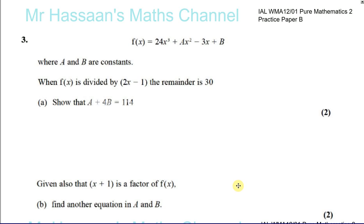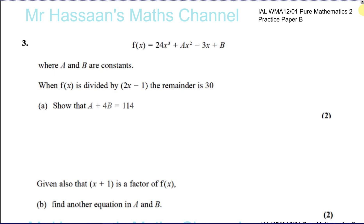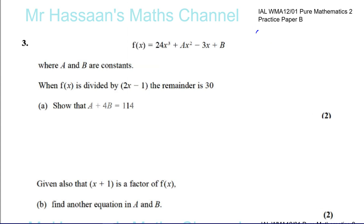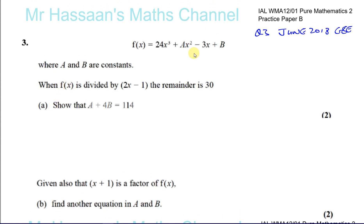This is practice paper B from Pure Mathematics 2 of the International A Level, taken from the C2 paper — specifically the GCE June 2018 paper. This is question 3 from that paper. I've taken out the questions related to the new P2, so most of practice paper B is from that particular paper. I'll just call it practice paper B to make it more relevant to Pure 2.